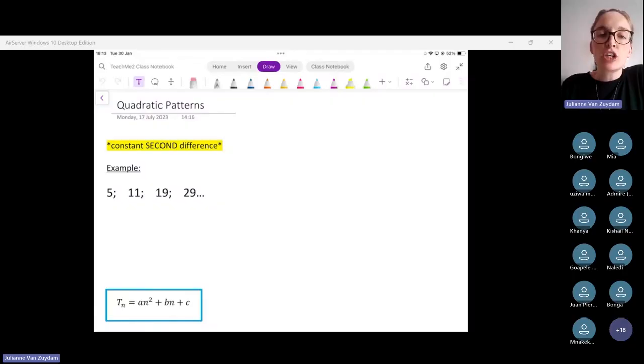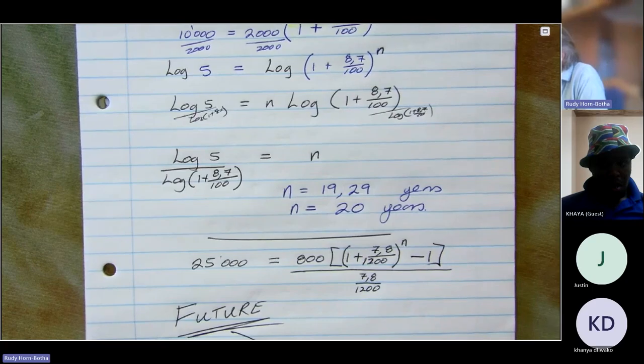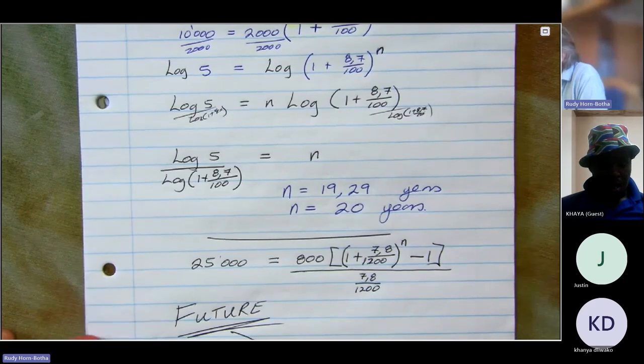The first strategy. There is a constant second difference. So what does that mean? This is a typical exam question that's coming up.